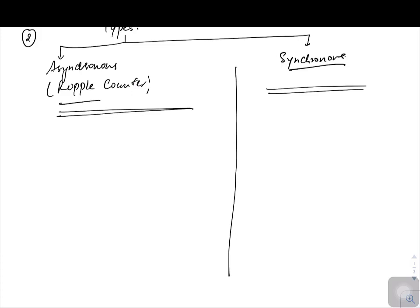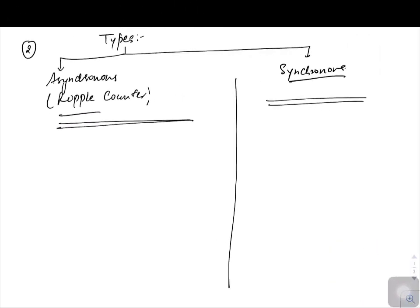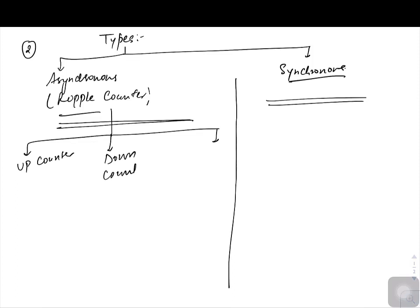These two types of counters can again be categorized into further types. If it is an asynchronous or ripple counter, it can be an up counter, it can be a down counter, or it can be a mixture of both — what we call an up-down counter.